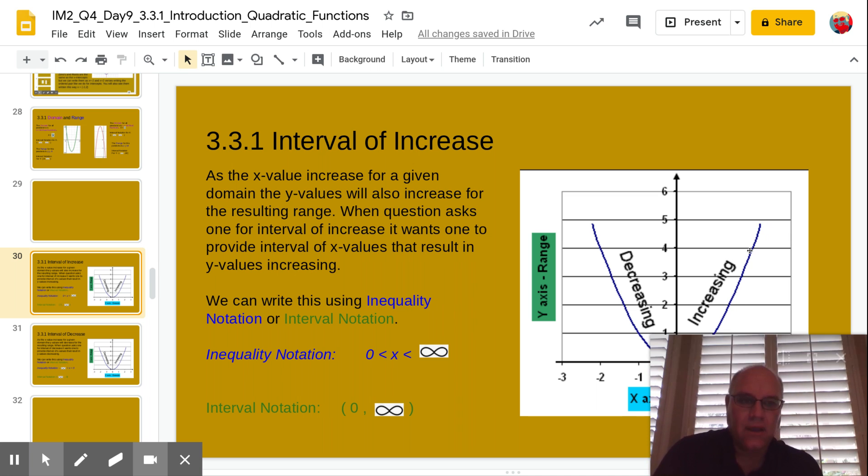And so then the notation we can use for this is, if I use inequality notation, well x is greater than zero and it's less than infinity. So this is x is greater than zero and x is less than infinity. I wanted to show you that so you see the interval for x going from the smallest value to the largest value.